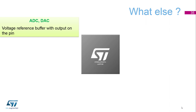There are two voltages available: 2.048V when the analog supply voltage is above 2.4V, or 2.5V when the analog supply is above 2.8V.